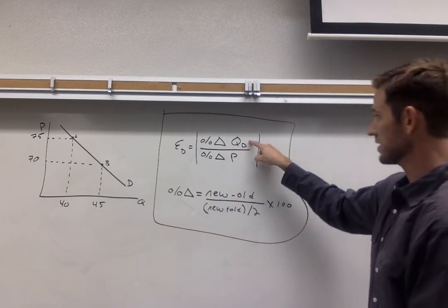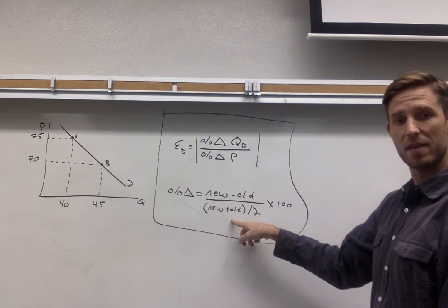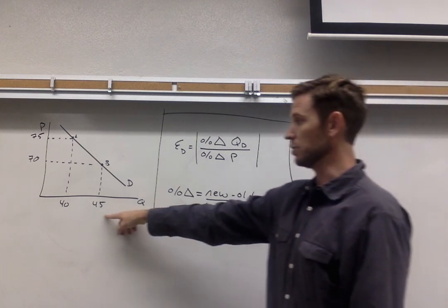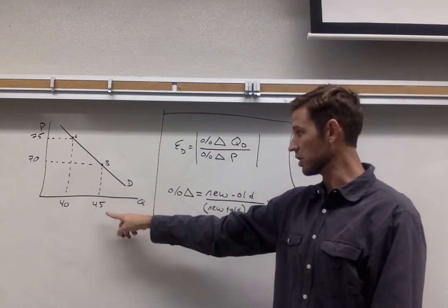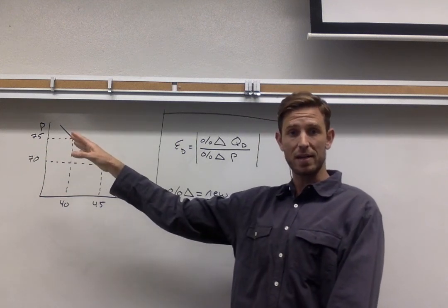So I always like to do the percentage change in quantity first. That means I'm going to use this midpoint method for percentage change applied to of course the quantity number. So I need to look at the 45 and 40 here while ignoring altogether the price data.